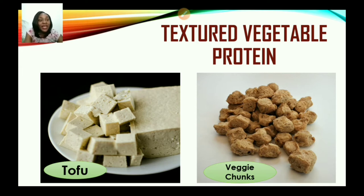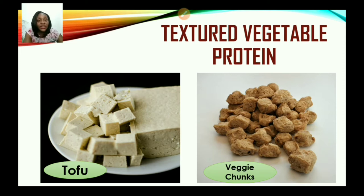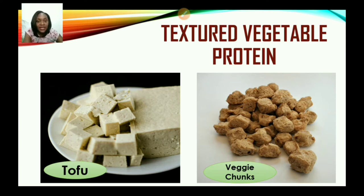Now let us look at some examples of TVP or textured vegetable protein. We have tofu and we also have veggie chunks. These are examples of TVPs. You may also have veggie mints, veggie burgers, and veggie balls. These products tend to look like meat — they are meat substitutes but they are made from soybean and they are rich in protein.